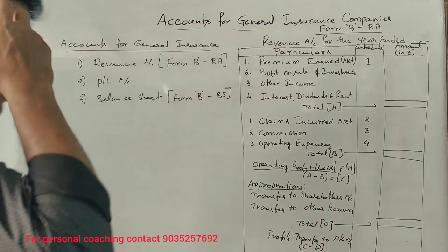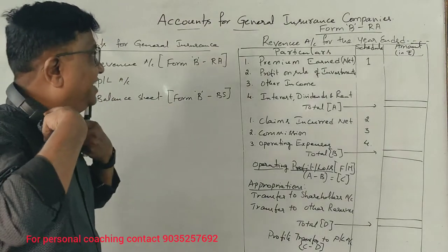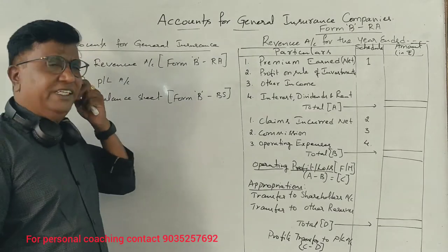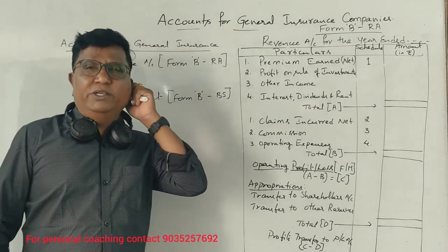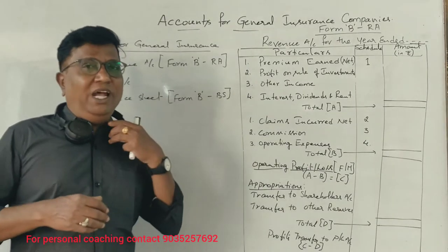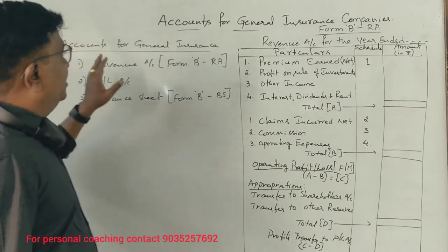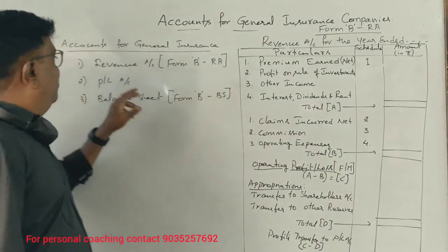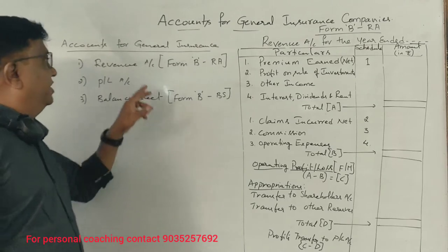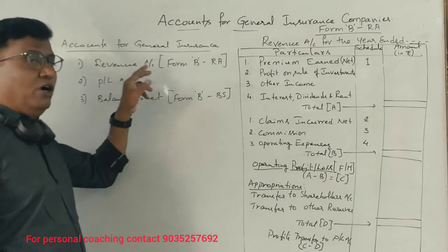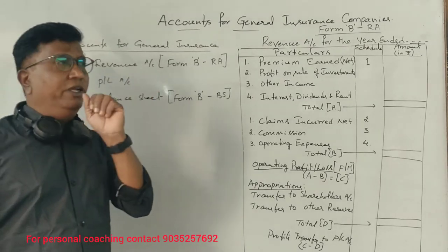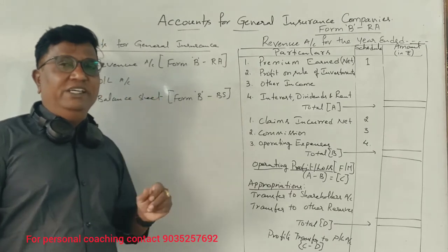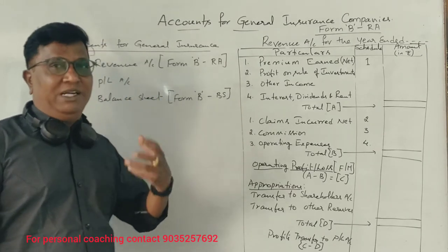What is the general insurance company? This is a general insurance company. One of the books of accounts is prepared for a general insurance company. One of the revenue accounts is prepared. A general insurance company is to handle the business.